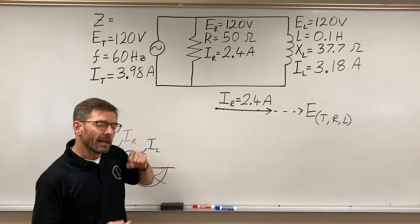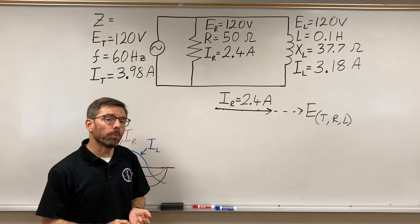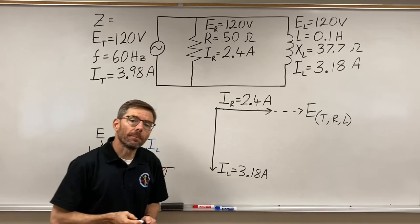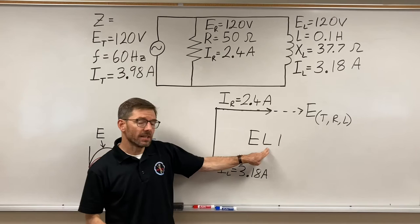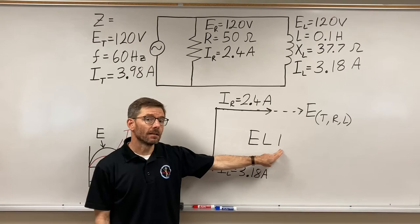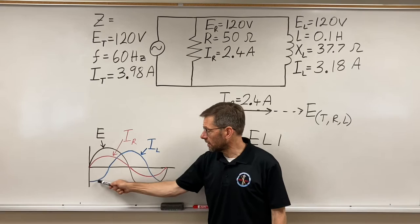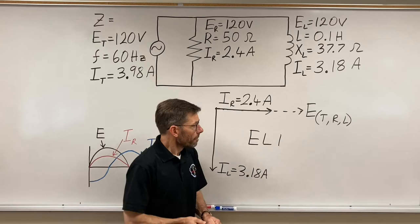So it comes down to where does my inductive current go. In series, the triangle's pointed up, but here I'm actually going to point the triangle down. Why do I point it down? It's because of ELI. Across an inductor, voltage comes first, current lags. It's right here. Here's the voltage, and the inductive current is 90 degrees behind it.